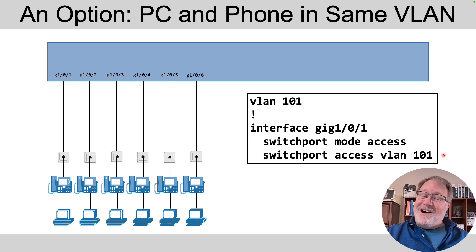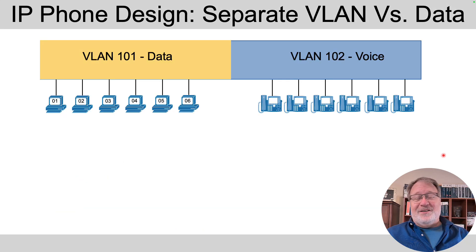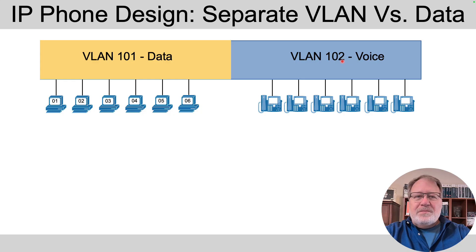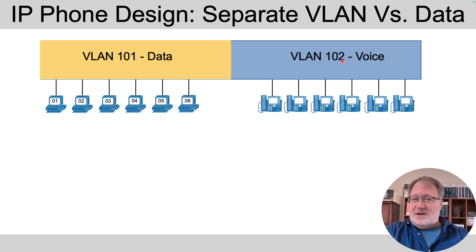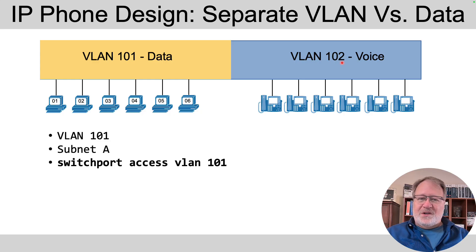That turns out not to be the recommended configuration. Instead, there's a big config concept that separates the PCs from the phones — and when you hear 'separate,' think VLANs. What Cisco recommends is that the PCs be in one VLAN, say VLAN 101, and the phones be in a second VLAN. This concept diagram shows them separated — they're still sharing a cable, each phone and PC — but the phones are in a separate VLAN like VLAN 102.